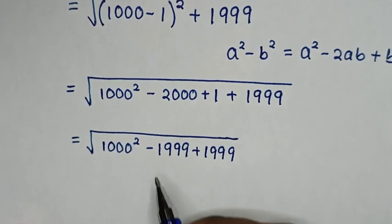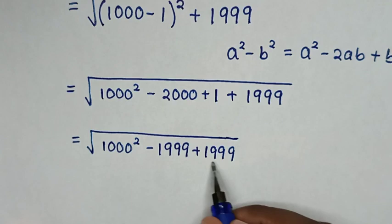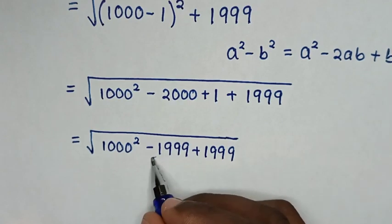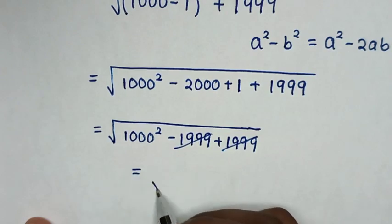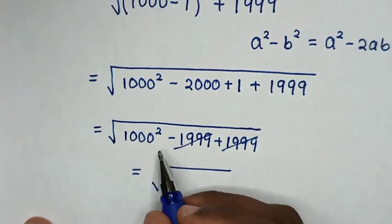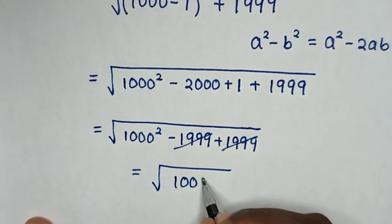Then in the next step, this negative 1999 plus 1999 is 0, so this and this will cancel. So it will be equal to square root of this 1000 square.